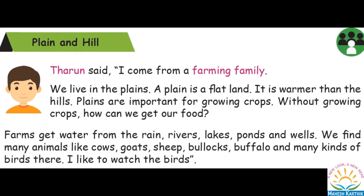Now comes Tarun. Tarun said: I come from a farming family. We live in the plains. A plain is a flatland. It is warmer than the hills. Plains are important for growing crops — without growing crops, how can we get our food? So Tarun is from a farming family living in plains, which are important for growing crops.